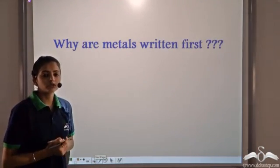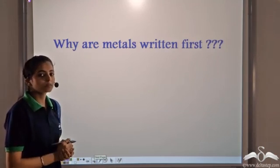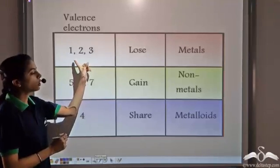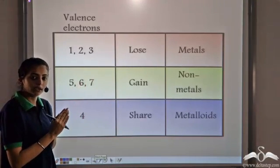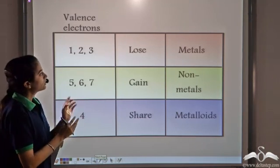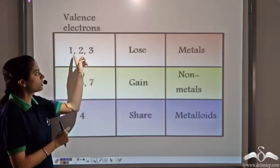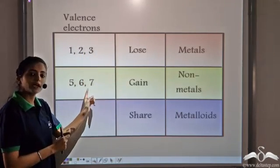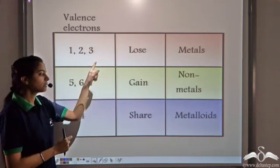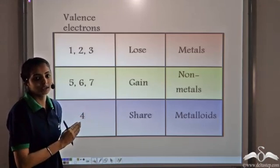You must be wondering why we always write the metals before the non-metals. This is because we follow a rule: we always write elements which have a lower number of valence electrons before elements which have a higher number of valence electrons. The number of valence electrons in metals is 1, 2, or 3, while in non-metals it is 5, 6, or 7. So metals always have fewer valence electrons than non-metals, which is why we write metals first.